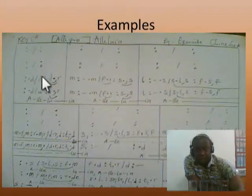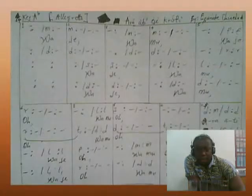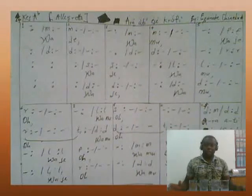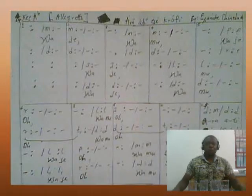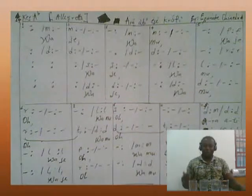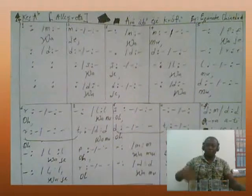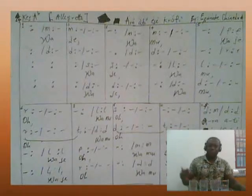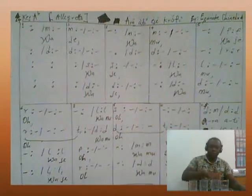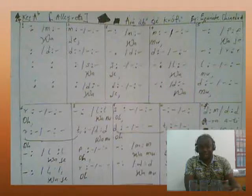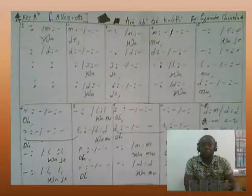Looking at that, you see that we have two silent beats there before you encounter the next notes. So we start: one, two, three, four, one, two. Just like that — it's very simple and easy for anyone to interpret.